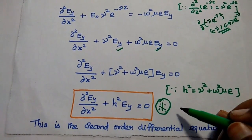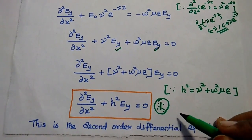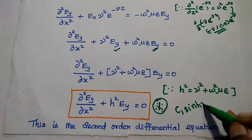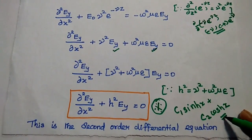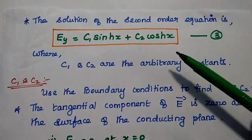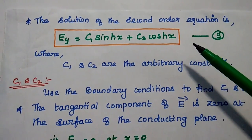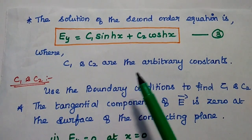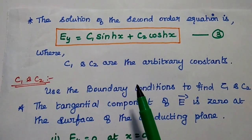This is the wave equation for TE waves — a second order differential equation. Solving this equation, we get: EY = C1·sin(HX) + C2·cos(HX). That is the solution for this wave equation. Consider this as the third equation, where C1 and C2 are arbitrary constants. We are going to find C1 and C2 using the boundary conditions.